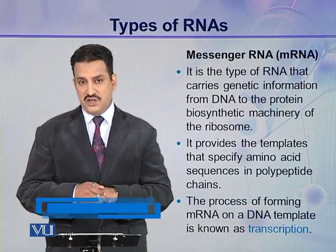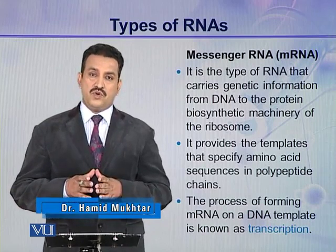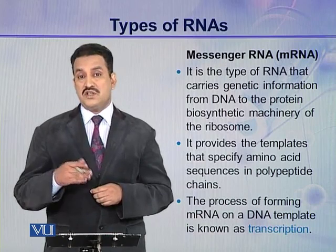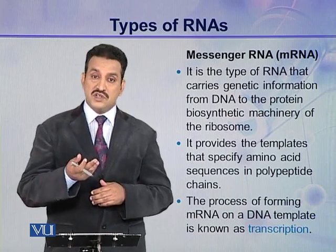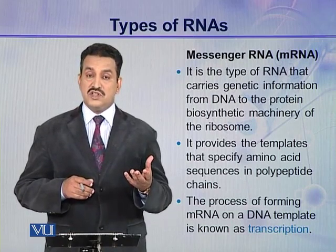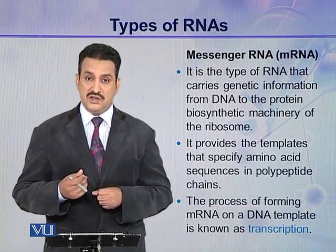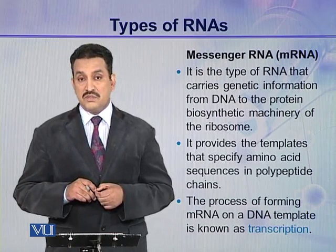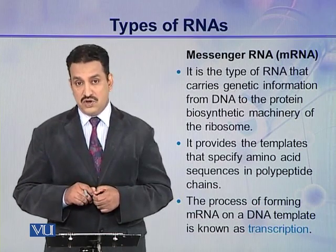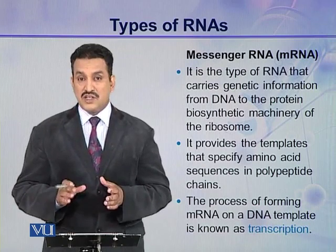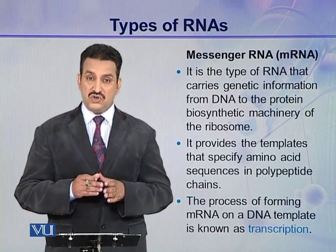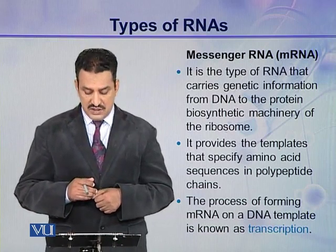The first type is messenger RNA. The process of protein synthesis is carried out in the cytoplasm, and DNA is only present in the nucleus — it doesn't go out to the cytoplasm. So how does it convey a message from the nucleus to the site of protein synthesis? Definitely there will be some messenger, and this messenger is a ribonucleic acid — mRNA or messenger RNA. It is that type of RNA that carries genetic information from DNA to the protein biosynthetic machinery, that is ribosomes, which are present in the cytoplasm.